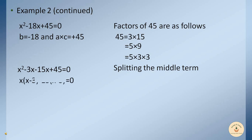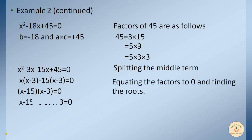Taking x common from the first two terms gives x(x − 3). Taking −15 common from the next two terms gives −15(x − 3) = 0 — remember, when taking negative common, the interior sign changes. Both brackets are equal, confirming our splitting. Combining gives (x − 15)(x − 3) = 0, so x = 15 or x = 3. Both are the roots of the given equation.